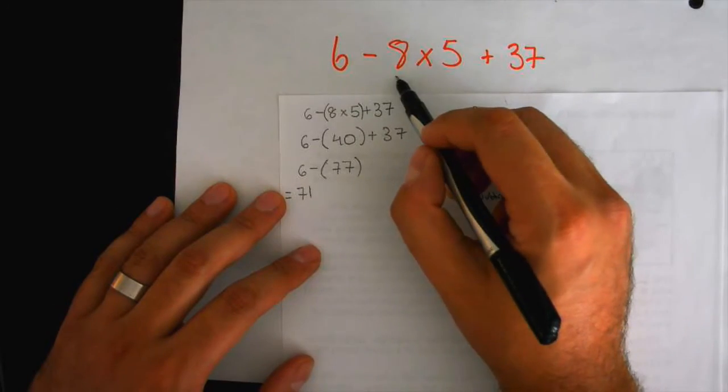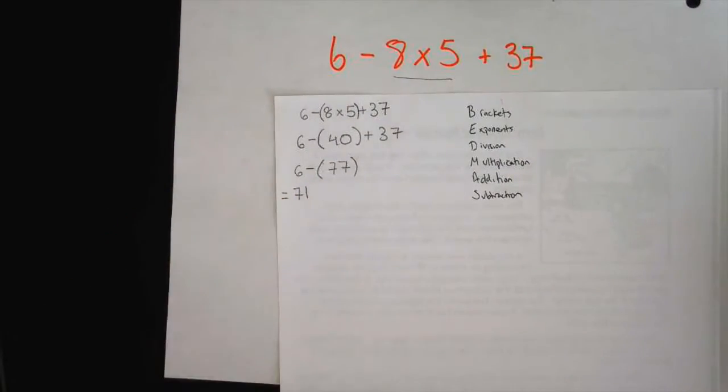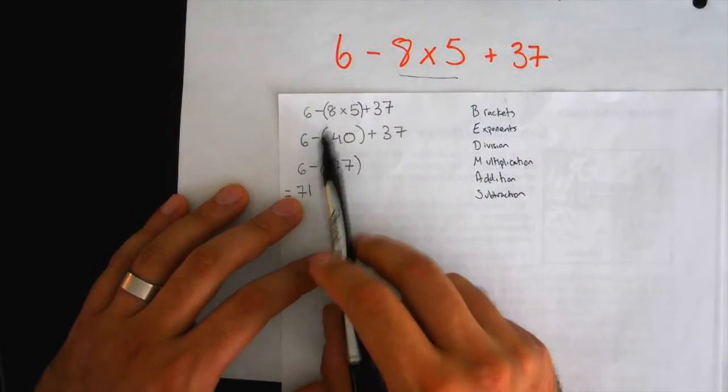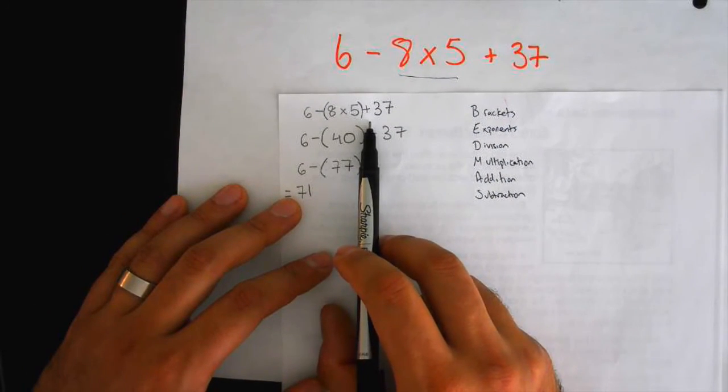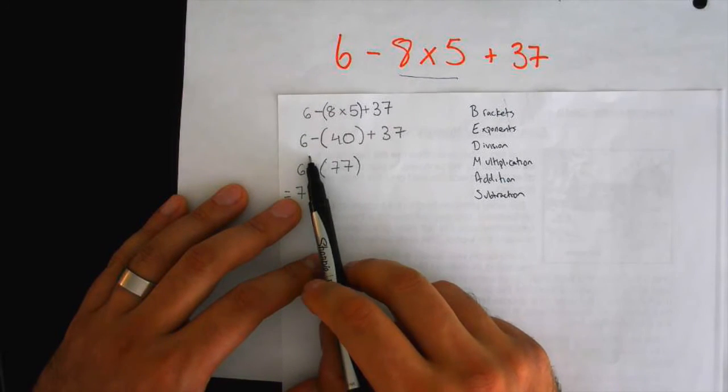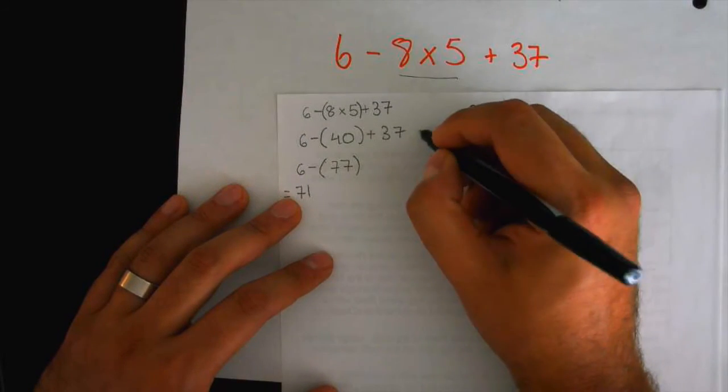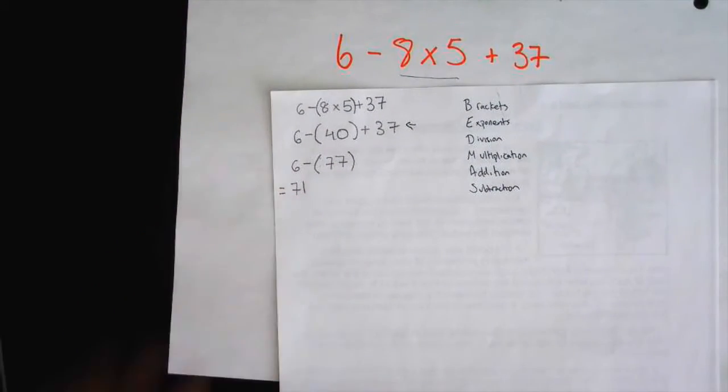Right, so this is being multiplied right here. So they bracketed that. You can do that, you don't have to. So they did that. Their first step here with the solving, do we agree that this step right here is correct?